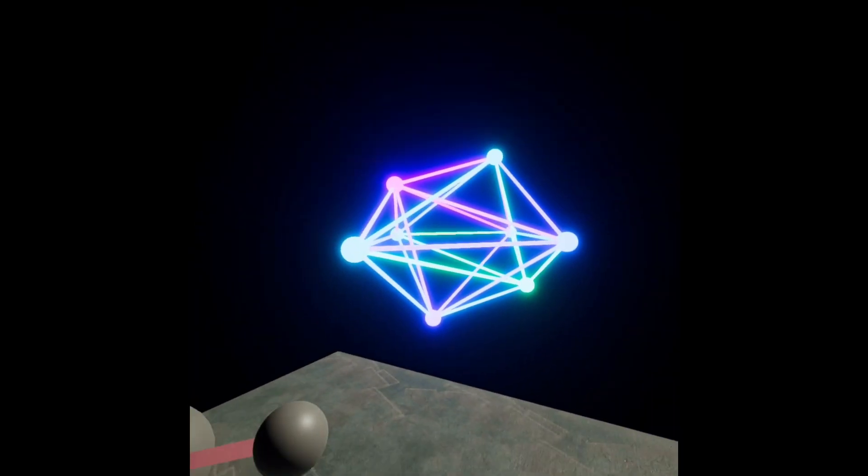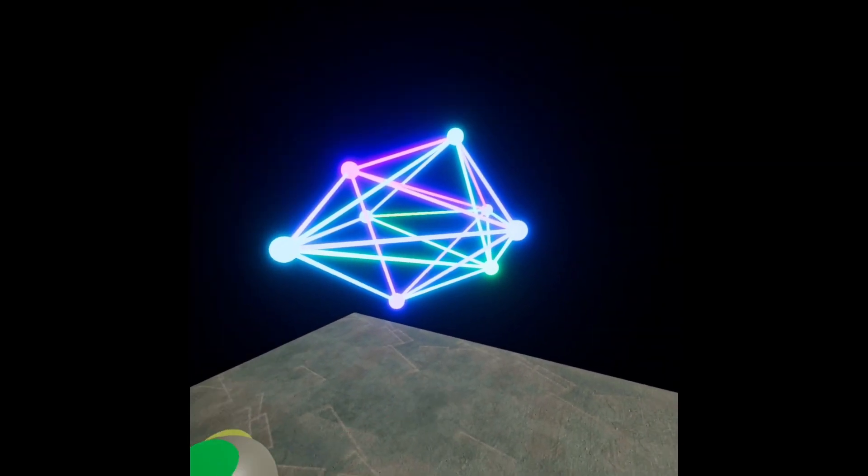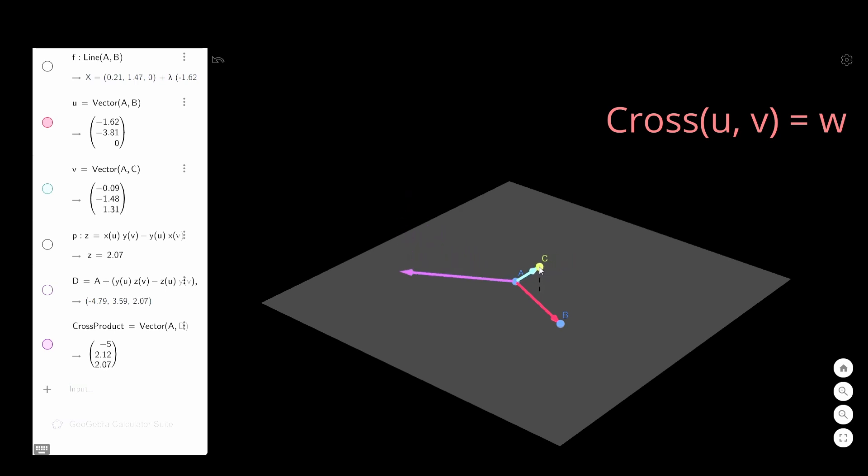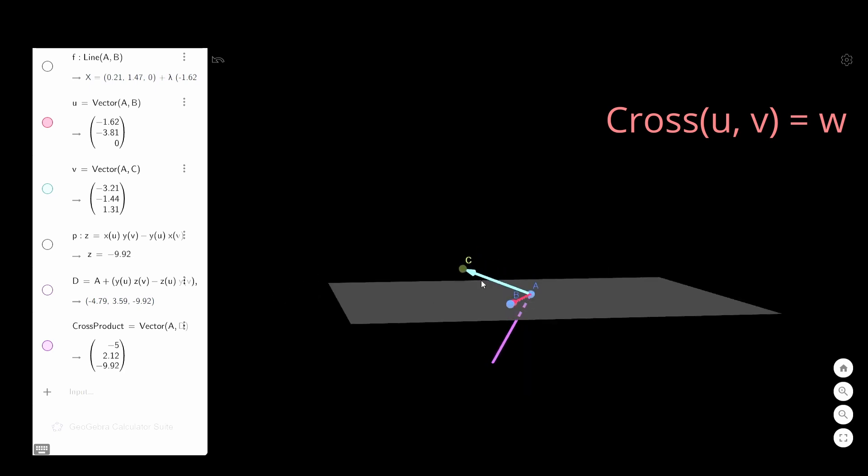Before we look at the 4D cross product, let's look at the 3D cross product. Cross product takes two 3D vectors as inputs and spits out another 3D vector that's orthogonal to the previous two vectors. For the purposes of this video I'm gonna ignore the length of the vector.